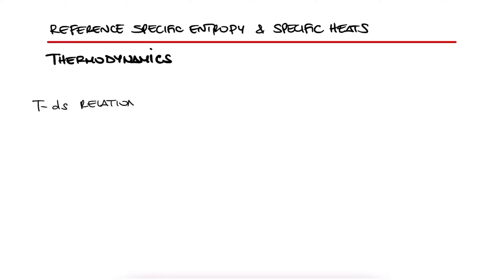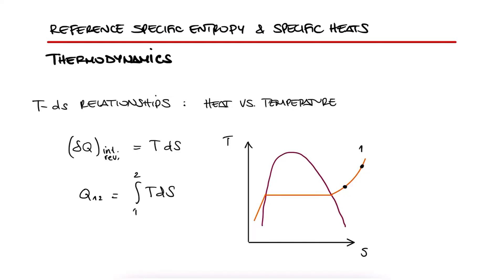TdS relationships provide us with relations between heat and temperature. We already introduced the concept of delta Q equals TdS, and this one is helpful because if we want to know the heat between two states, let's say 1 and 2 in this T-S diagram, we can just take the integral, or the area under the curve for that process.